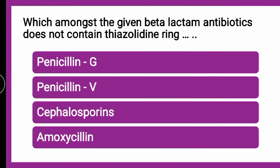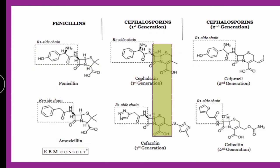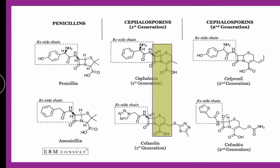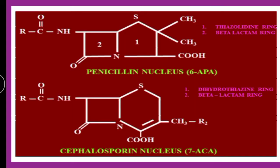The next question is: Which amongst the given beta-lactam antibiotics does NOT contain a thiazolidine ring? Whether it is Penicillin G, Penicillin V, Amoxicillin, or Cephalosporins? The correct answer is Cephalosporins. If you look into the structures of cephalosporin, the thiazolidine ring is present only in penicillin. Cephalosporins do not contain a thiazolidine ring; instead, cephalosporin contains a dihydrothiazine ring.